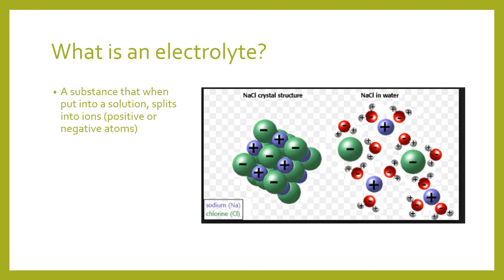An electrolyte is basically when you drop a substance into a solution and it splits into its ions — both positive and negative forms. For example, salt in crystal form has sodiums and chlorines bound directly to each other. But when you drop it in water, it dissociates — the chlorines and sodiums separate and dissolve into the water.